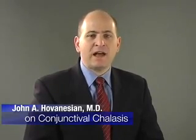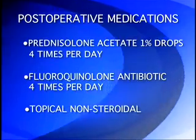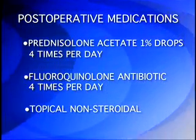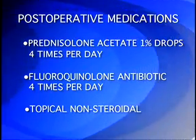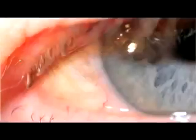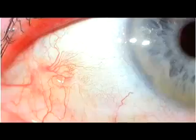After surgery, eyes are patched and shielded overnight, and patients begin prednisolone acetate and fluoroquinolone antibiotics along with a topical nonsteroidal anti-inflammatory drop beginning the day after surgery. They're seen back in the office about one week later. These pre- and post-operative photographs show the appearance of the eye before and one month following the procedure. Of note, the ocular surface of the limbus appears much less inflamed and is completely covered with surface epithelia. At this stage, the patient is completely free of pain symptoms.